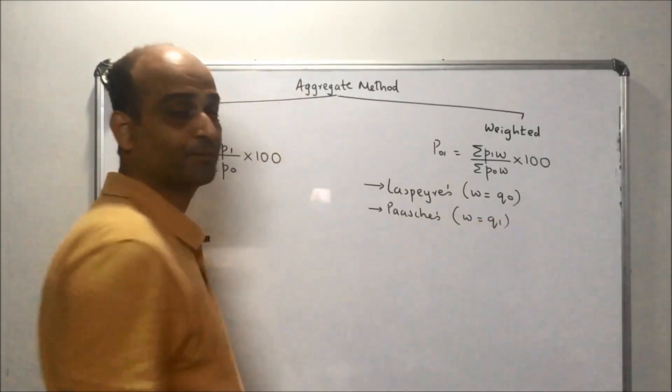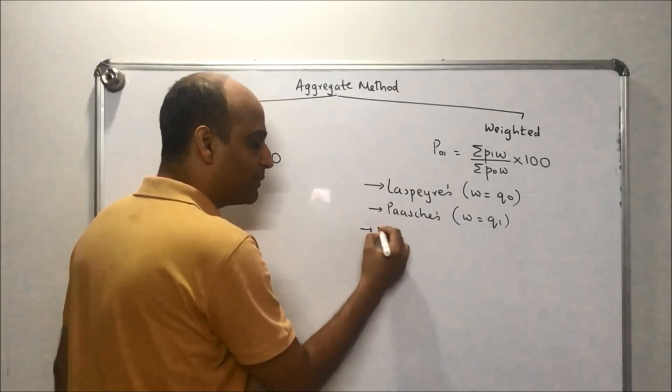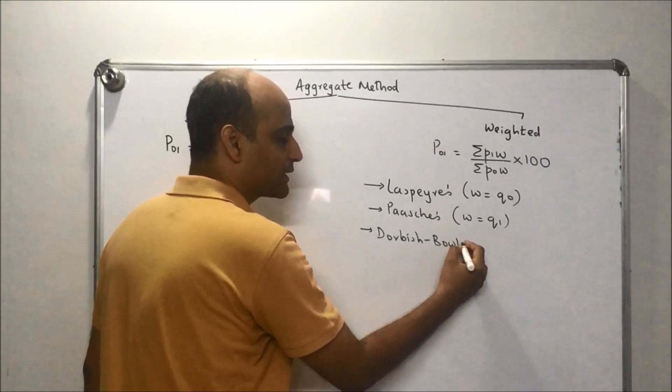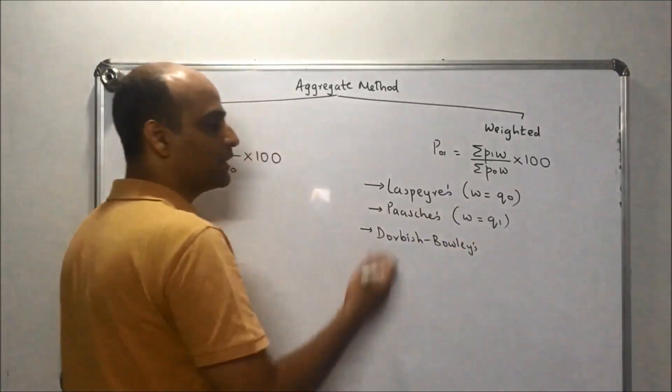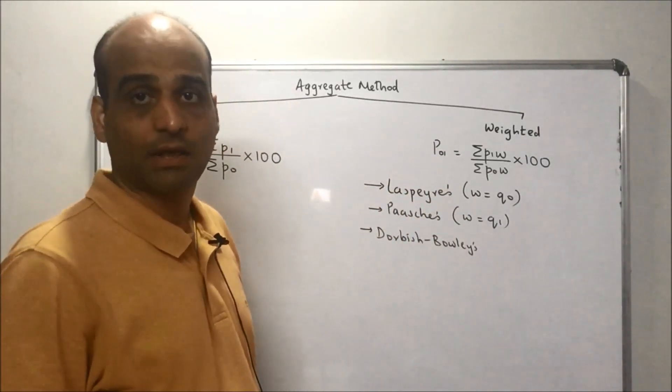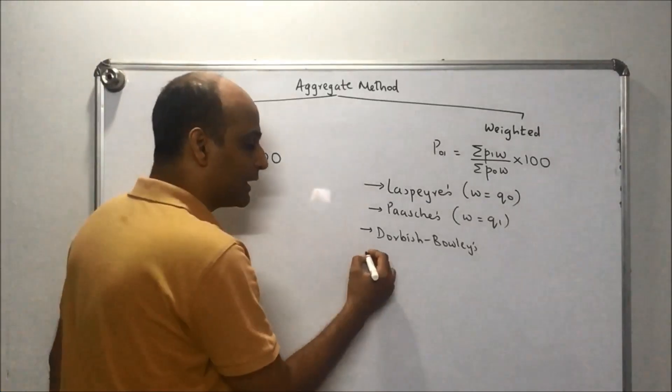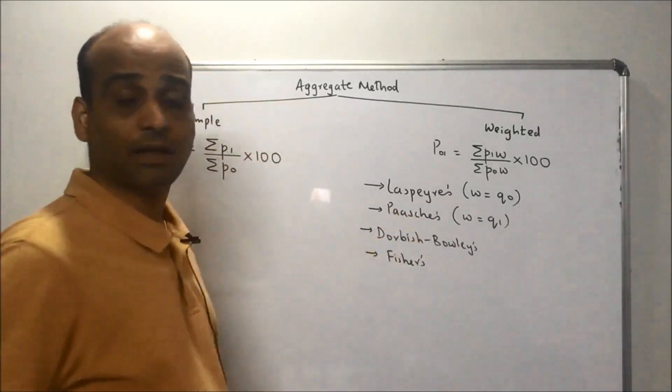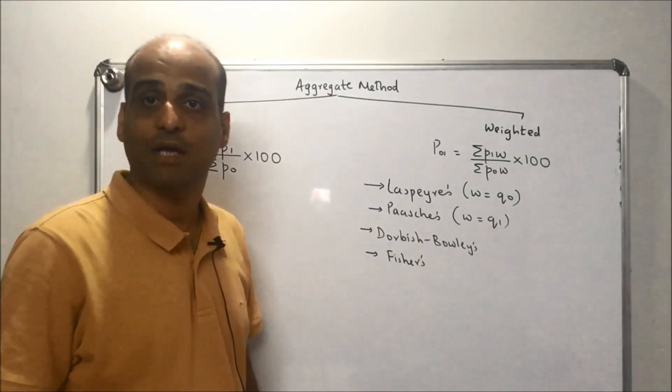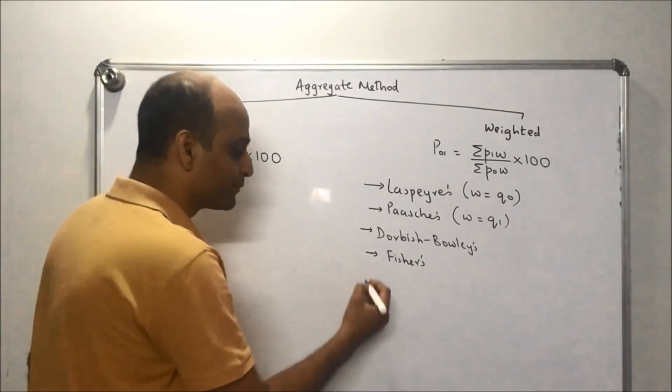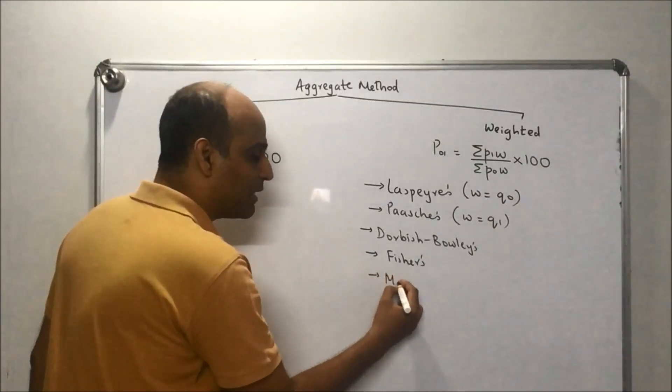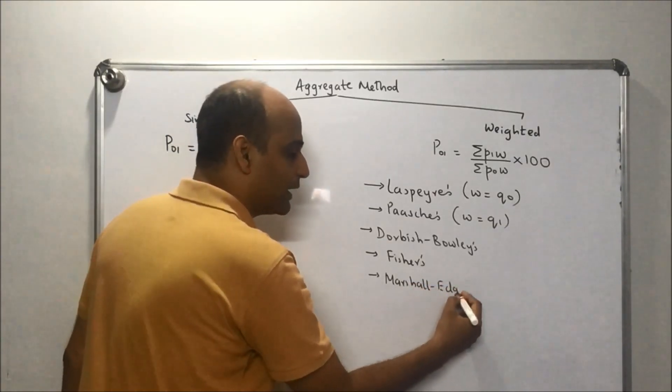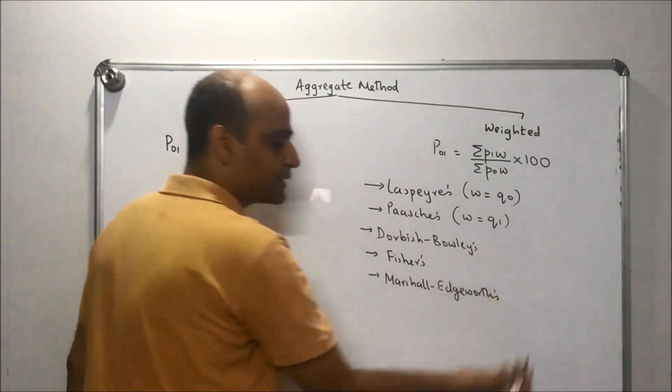Next comes Paasche's index. In Paasche's index, weightage is given to Q₁. Next comes Dorbush-Bowley's index, which is actually the average of Laspeyres and Paasche's indices. Next comes Fisher's index, which is the geometric mean of Laspeyres and Paasche's indices.